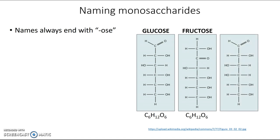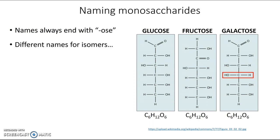Here's one more molecule that's just a little bit different from glucose — this hydroxyl group is on the opposite side. It also has the formula C6H12O6, but again a slightly different structure, so it needs a different name. This one is galactose. We have different names for different isomers. The three you need to know are glucose, fructose, and galactose, and you'll need to memorize the names and formulas.